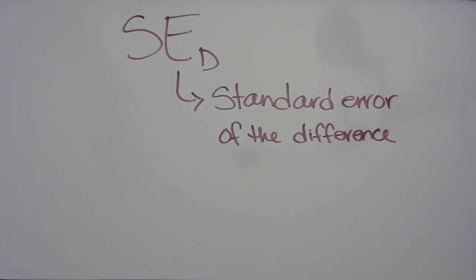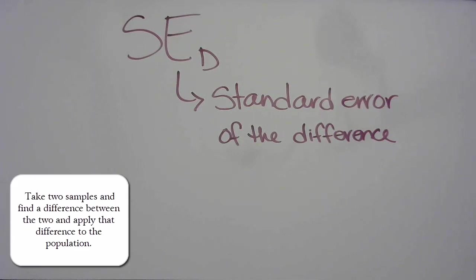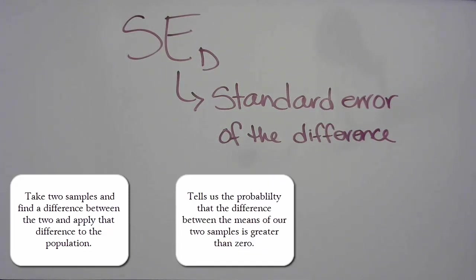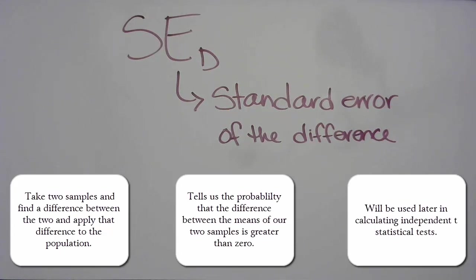Today we are going to be going over the standard error of the difference. The standard error of the difference lets us take two groups or two samples and estimate the difference between those groups and see if we can apply that difference to the entire population. It also tells us the probability that the difference between the means of these two samples is greater than zero.